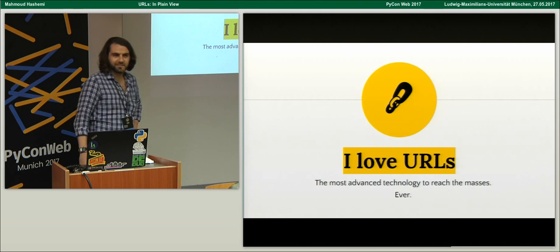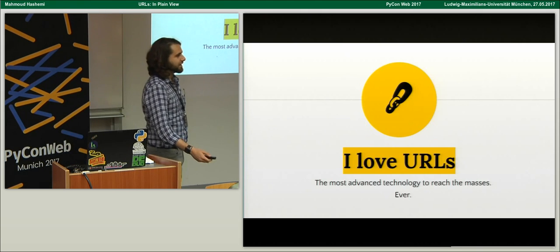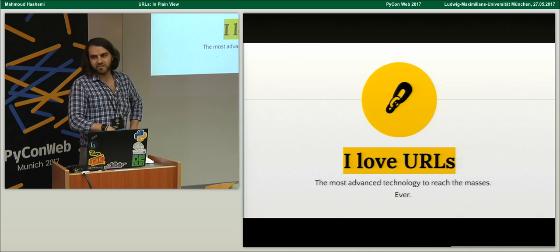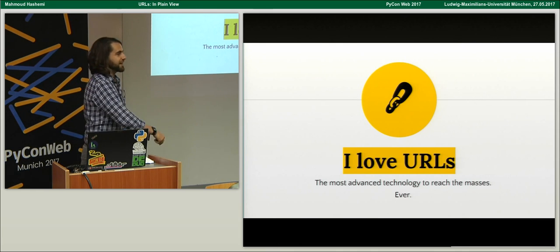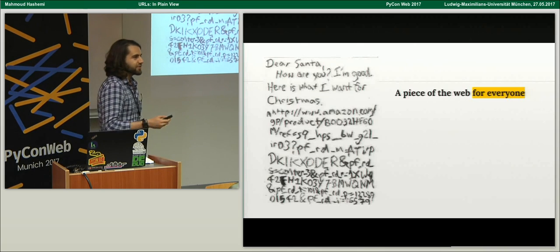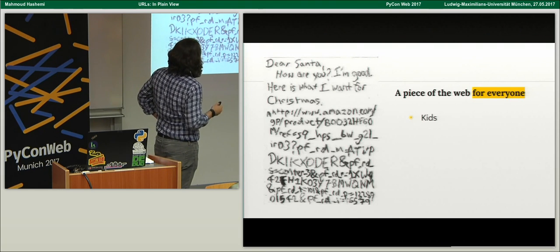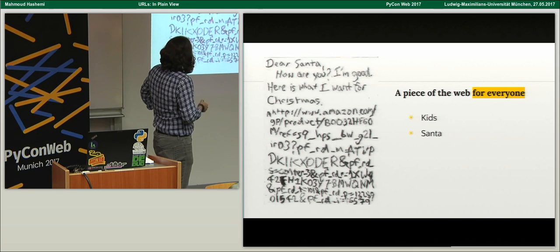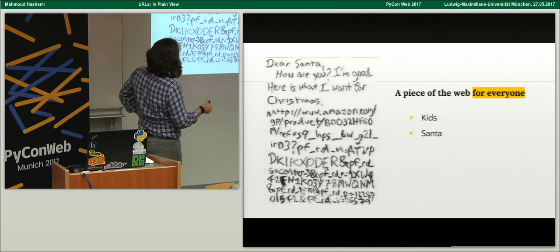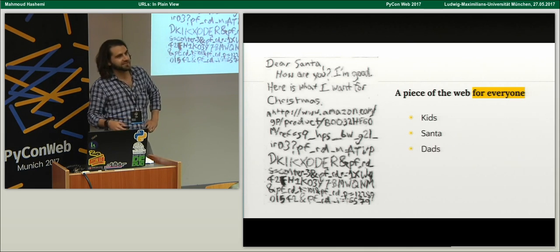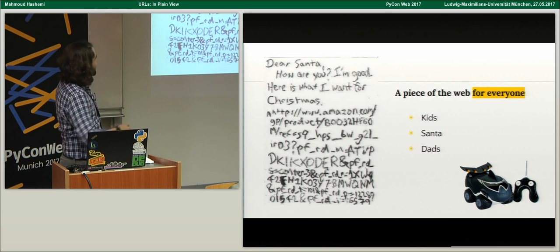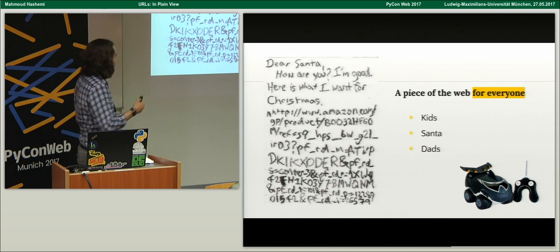I love URLs. This is very strange, I know. But it's PyCon web, and it wouldn't be the web without links and URLs. I think that they are the most advanced technology to ever reach the masses. Even before we were able to drive, we're writing letters. Kids are writing letters to Santa, asking for things on Amazon.com. This beautiful letter to Santa is probably received by some dad, who has to go out and buy this RC car. This child has just harnessed the power of the web in the shape of the URL written in crayon.